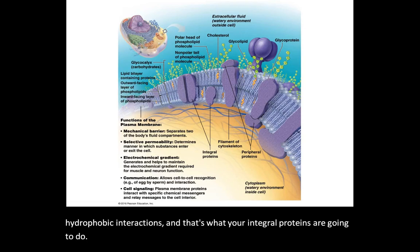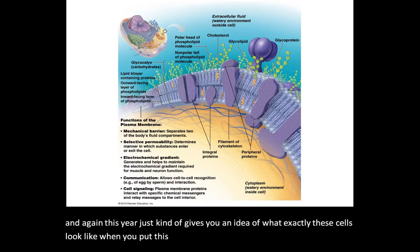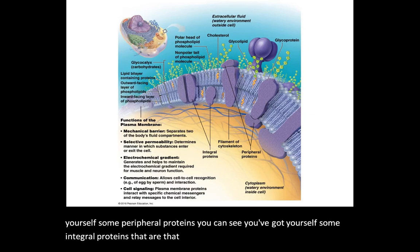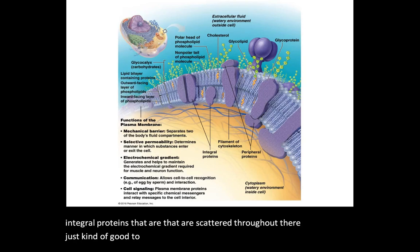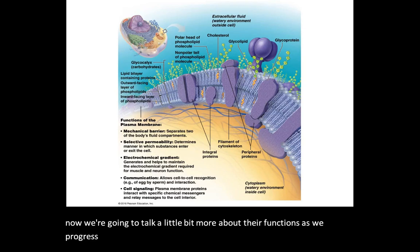This gives you an idea of what these cells look like when you put it all together — you can see peripheral proteins and integral proteins scattered throughout the membrane. It's good to be able to recognize them based on location. We'll talk more about their functions as we progress into the next video.